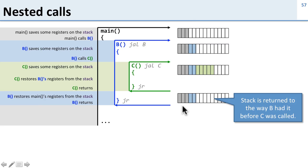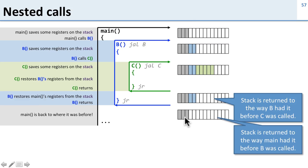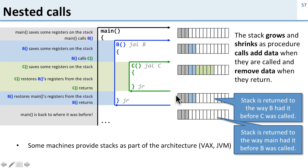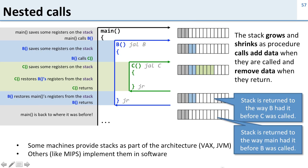The same thing happens when B returns — we clean up the stack and put it back the way it was when we were in main. So the stack grows and shrinks as we call and return from procedures. Each procedure puts data onto the stack and must remove it when done. Some machines provide stacks as part of their architecture — the old VAX machines and the Java Virtual Machine are both stack-based. In MIPS, you have to implement this in software, which is why we do all this work to increment and decrement the stack pointer.